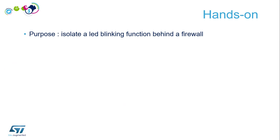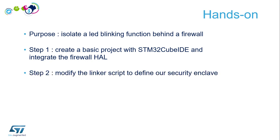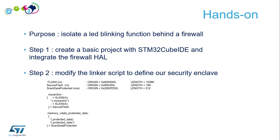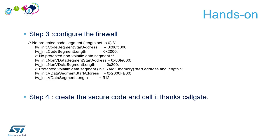For this firewall hands-on, the purpose is to isolate a LED blinking function behind the firewall. Step one: create a basic project with STM32CubeIDE and integrate the firewall HL. Step two: modify the linker script to define the security enclave location, defining a secure flash area and a RAM data protected area. Step three: configure the firewall, defining addresses to protect the code segment, non-volatile data segment, and volatile data segment, then create secure code called through call gates.